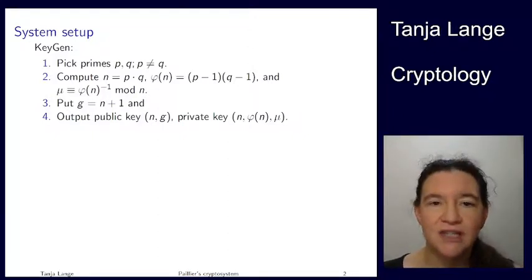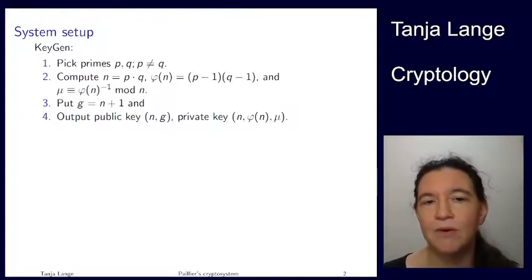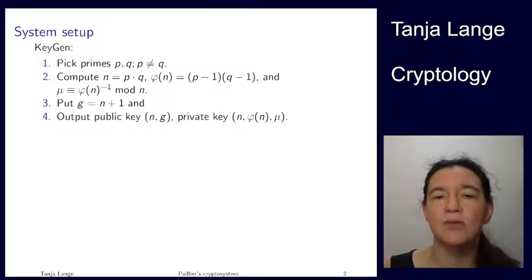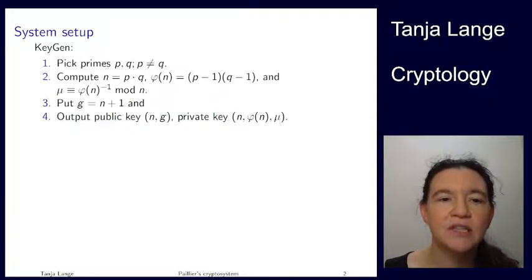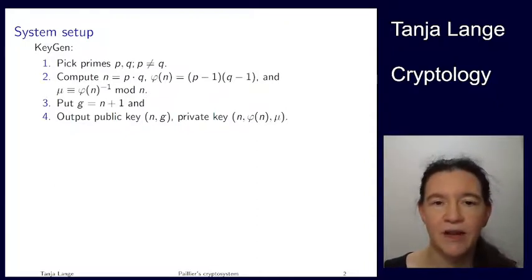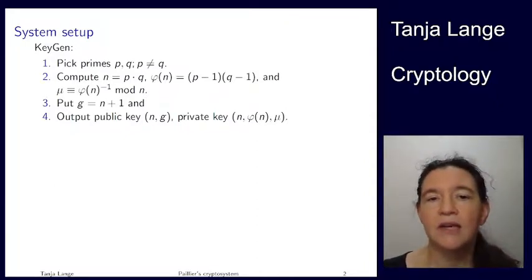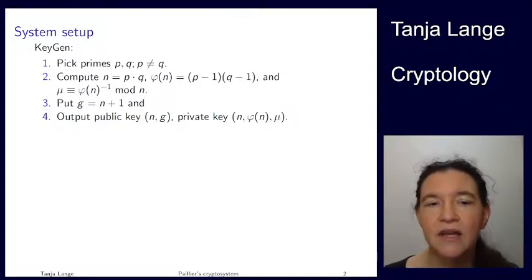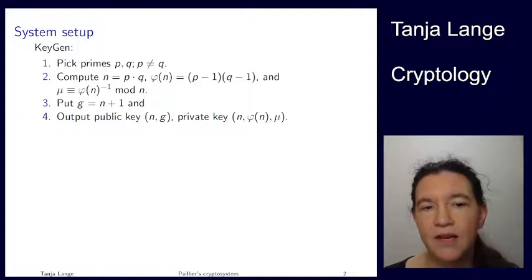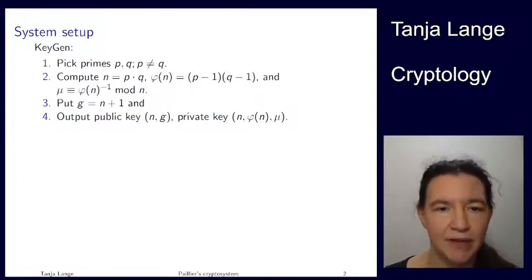The key generation starts a little bit like RSA key generation. So you're picking two large primes, p and q, so that they're not the same. And you're computing n exactly the same as RSA: n is p times q. And then φ(n), the Euler phi function, is (p - 1) times (q - 1). In addition, we will need the inverse of φ(n) mod n. And if p and q are large primes of about the same size, then φ(n) is invertible mod n.